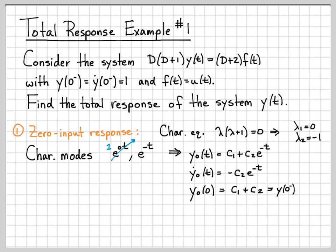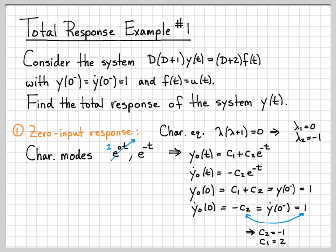The total response at zero minus equals 1, so c1 plus c2 equals 1. For the derivative, evaluating at time zero gives minus c2, which equals the total response derivative at zero minus, also equal to 1. So c2 equals negative 1, and going back, c1 must equal 2. We've used our initial conditions to solve for the unknowns, and the zero input response is 2 minus e to the negative t, times the unit step.